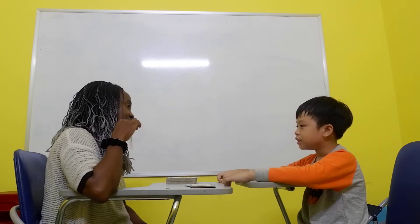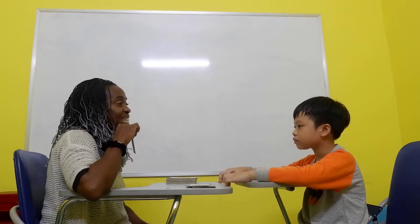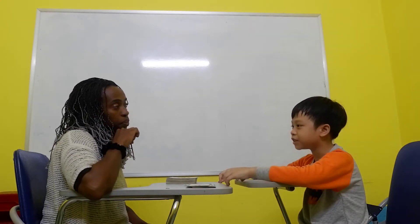What is it? It's a horse. Okay. What is it? It's a house. Good.